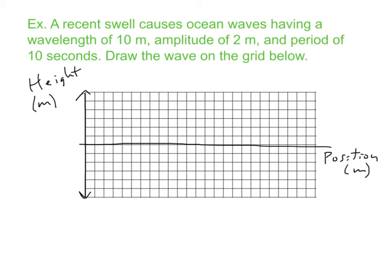Let's take a look at another example involving ocean waves. Do this in your concept catalog. A recent swell causes ocean waves having a wavelength of 10 meters, amplitude of 2 meters, and period of 10 seconds. Draw the wave on the grid below. I have a grid set up, labeled the axes: vertical is height of the wave, horizontal is position. Let's number these from 1 to 25.